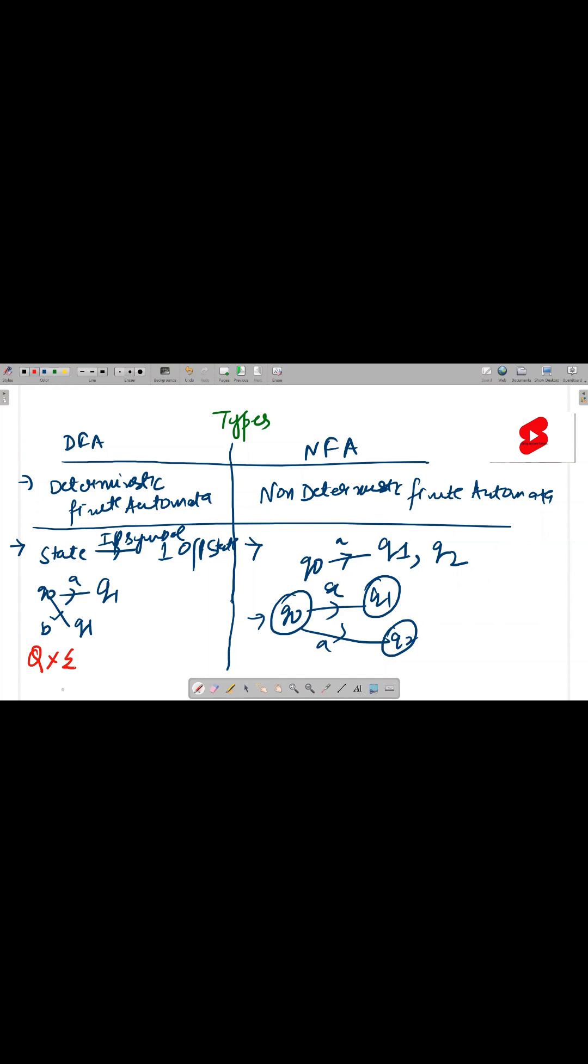Given any input symbol, it can go to set of states. Given any sort of input symbols, it can go to two different answers. So, I am writing it as 2 raised to Q.